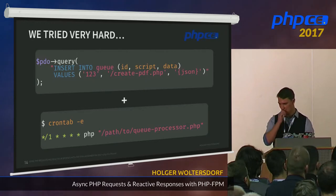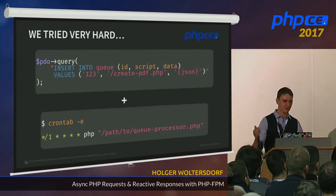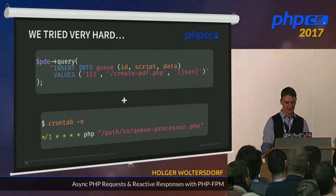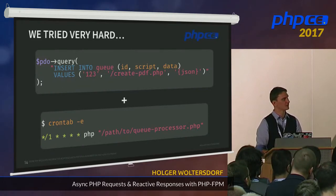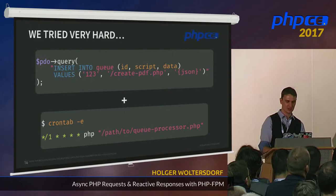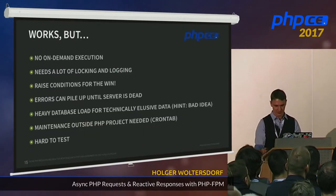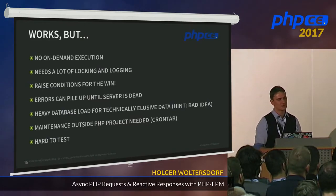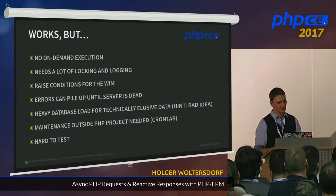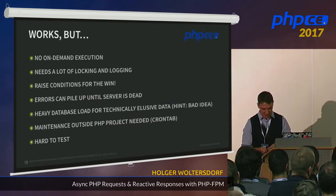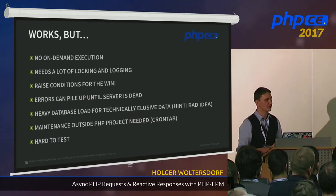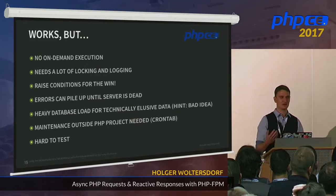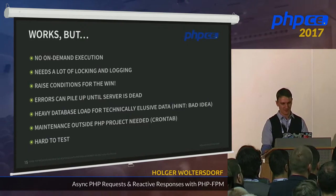We also tried setting up a kind of queue in a database — inserting our script and its payload into a database table and establishing a cron job that runs every minute to check if the script needs to run. That works too, but there's no on-demand execution. We need a lot of locking and logging, and it's easy to get race conditions. If you're not watching your cron tab, errors can pile up until the server shuts down, and you have heavy database load for data that doesn't really belong in the database.